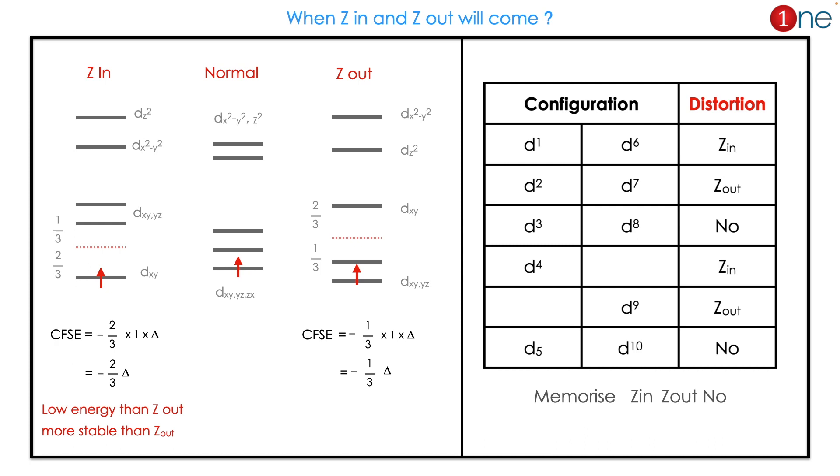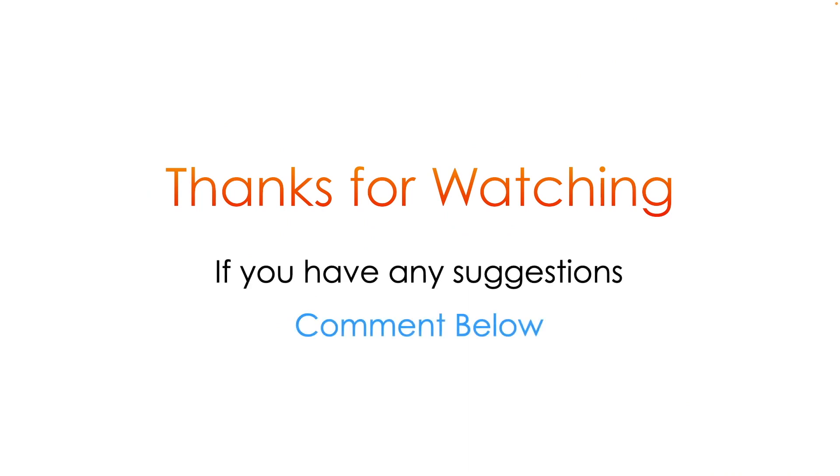d4 is Z in; d9 is Z out. That is the important thing - you should not confuse it. d5 and d10 obviously don't have any distortion. So memorize Z in, Z out, and No. That's all from this video. Thanks for watching.